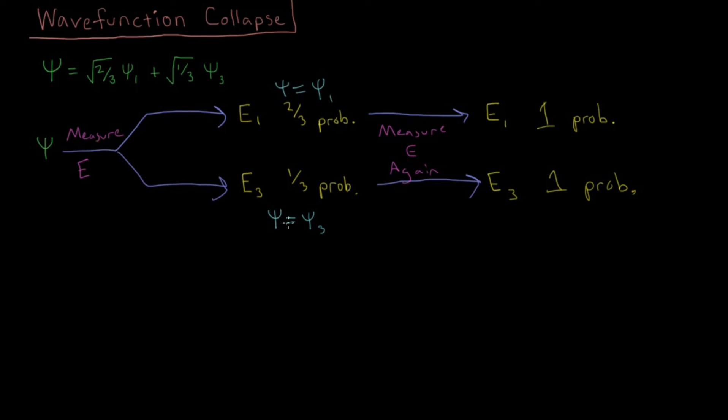Similarly on the bottom, if our wave function collapses into the third eigenstate, then its coefficient is 1, and there is a 100% chance we measure the energy of that eigenstate again if we make the measurement again.